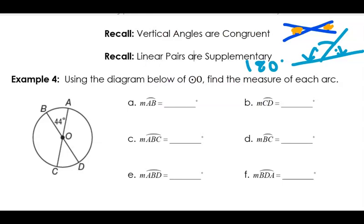Let's look at this first one. Arc A, B — the central angle is 44 degrees, so it is also 44 degrees. Pretty straightforward.